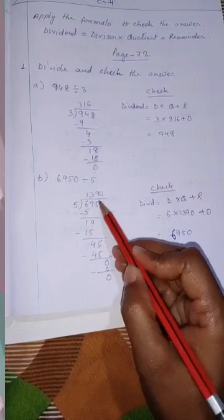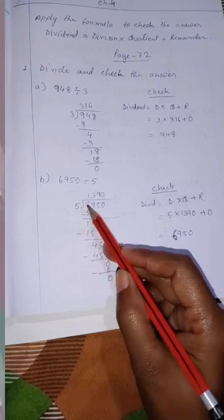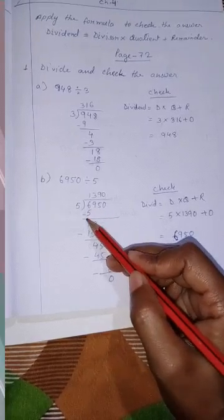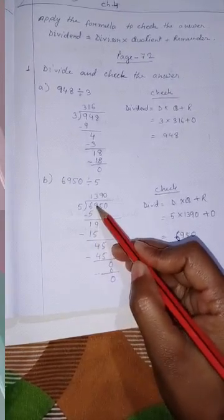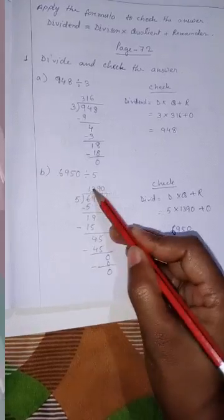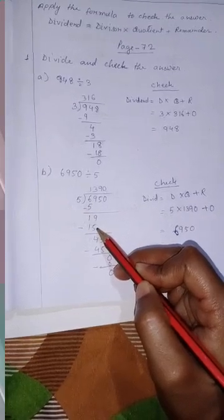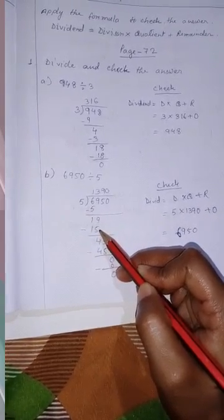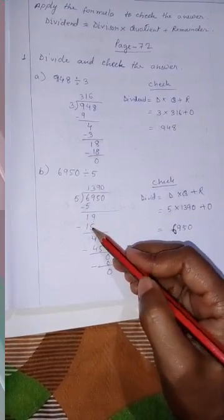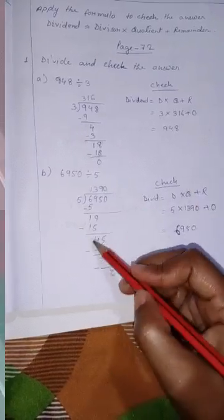Next: 6950 divided by 5. In the 5 times table, 6 doesn't come, so 5 ones are 5. 6 minus 5 equals 1, I write 1 here. 9 comes down — 19, and 5 doesn't go into 19 exactly. 5 threes are 15; 5 fours are 20 which is too big, so 5 threes are 15. 19 minus 15 is 4, so I write 4.